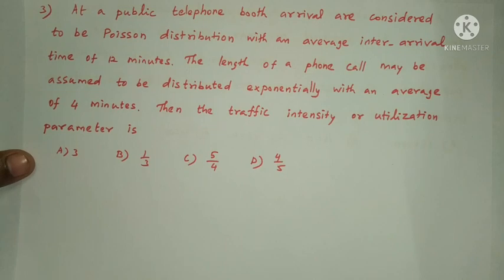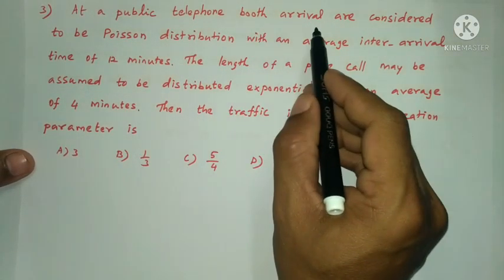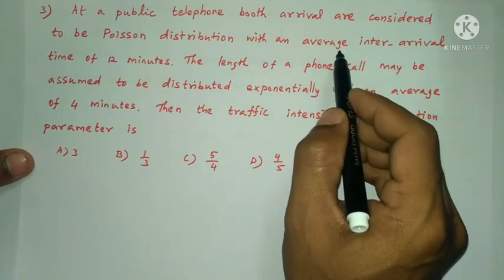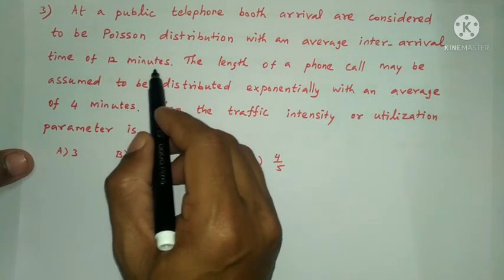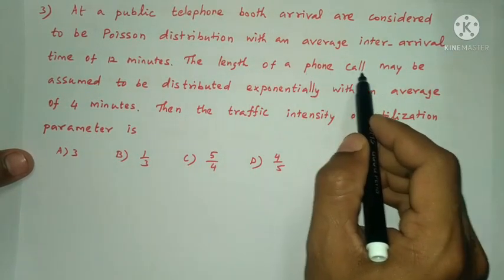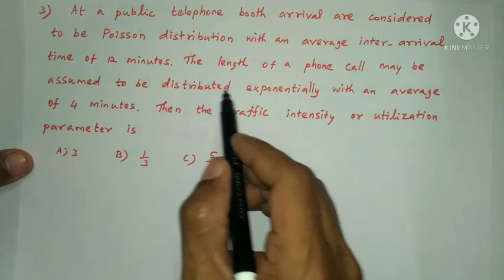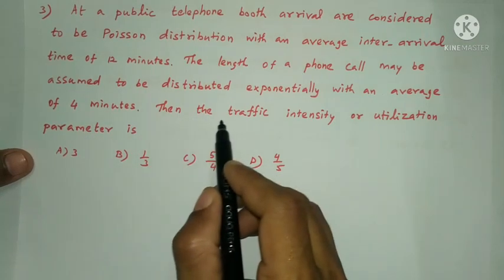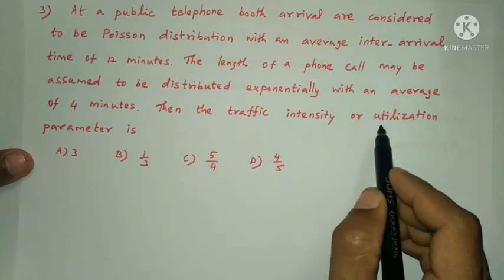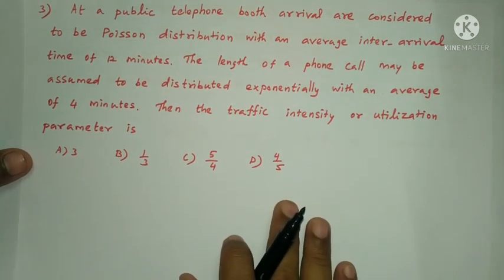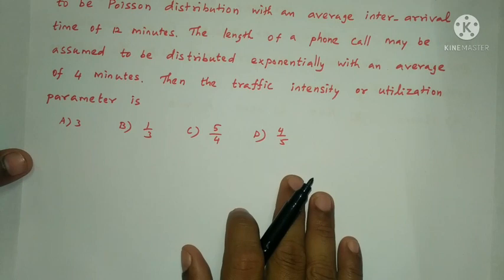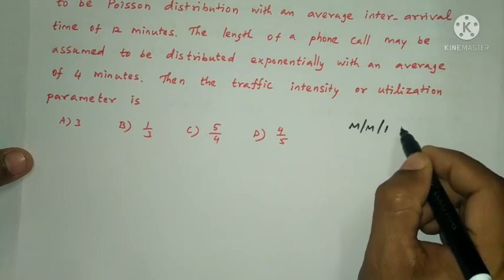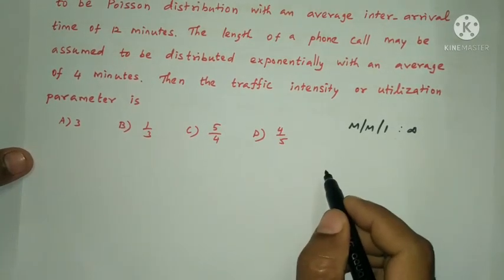Next question: at a public telephone booth, arrivals follow a Poisson distribution with an average inter-arrival time of 12 minutes. The phone call duration is exponentially distributed with an average of 4 minutes. Find the traffic intensity (utilization parameter). This is an M/M/1/∞ model with 1 server.